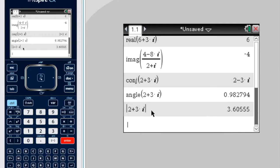Now, so if you were to graph 2 plus 3i as a vector, the length of that vector would be 3.6 approximately.